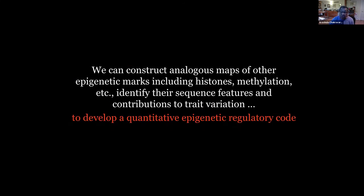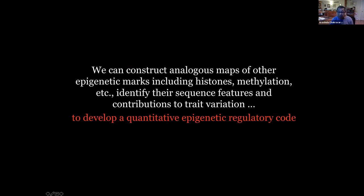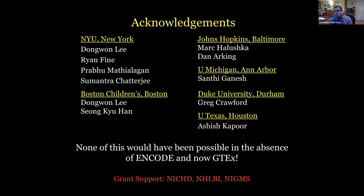I just want to end by saying that these kinds of maps can be constructed and used from all the other epigenetic marks that people study. I think this is going to be important because eventually this will allow us to build a quantitative epigenetic regulatory code, which will turn out to be very important for the study of complex diseases. I have a whole host of people to thank — Dongwon's work, as well as many other people who helped with collection of tissues, families, and analysis. There's no doubt none of this would have been possible in the absence of ENCODE and recently also the data from GTEx. Thank you very much.